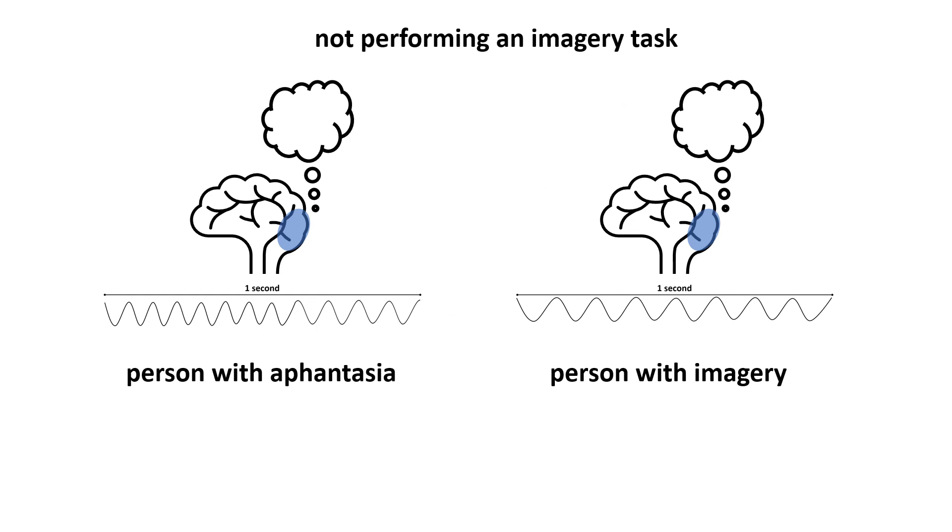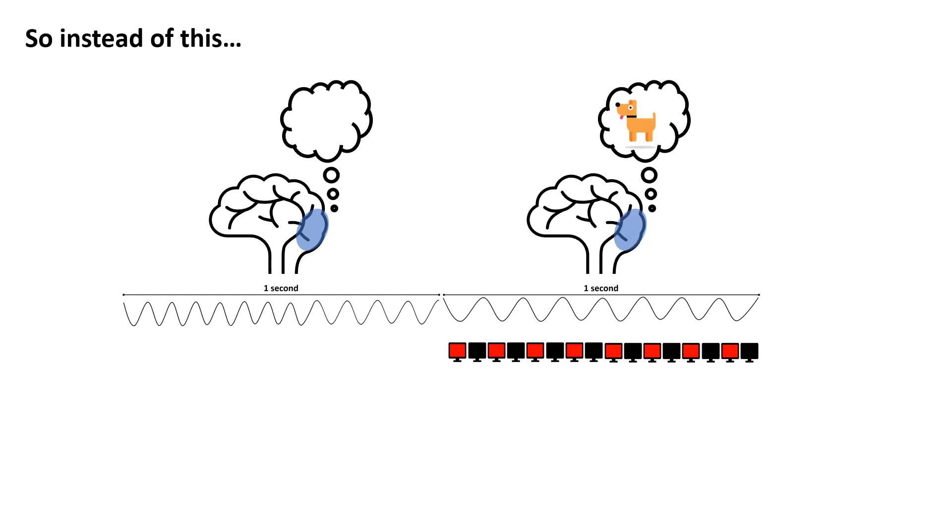We hypothesize that people with imagery and people with aphantasia have different natural brain rhythms even when they are not performing any task, and these rhythms will interact with GANS flicker differently. So instead of this big change from high frequency to low frequency brain rhythms induced by the onset of GANS flicker, we think that GANS flicker will interact with these frequencies to make them lower, just not that much lower.